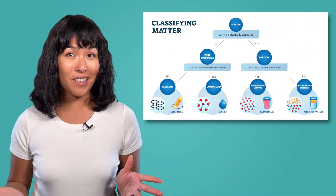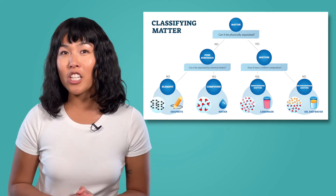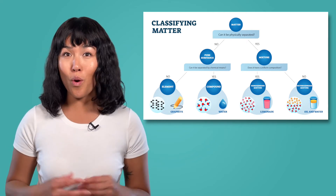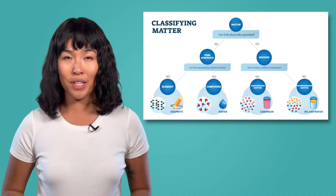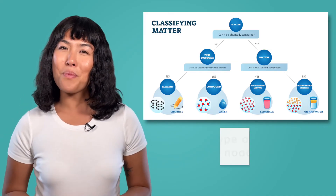Sometimes in situations like this, where there are a lot of different categories to sort through, it is helpful to use a flowchart. When using a flowchart, you ask a series of yes and no questions to help you get through to a final choice. Let's try it with an example.